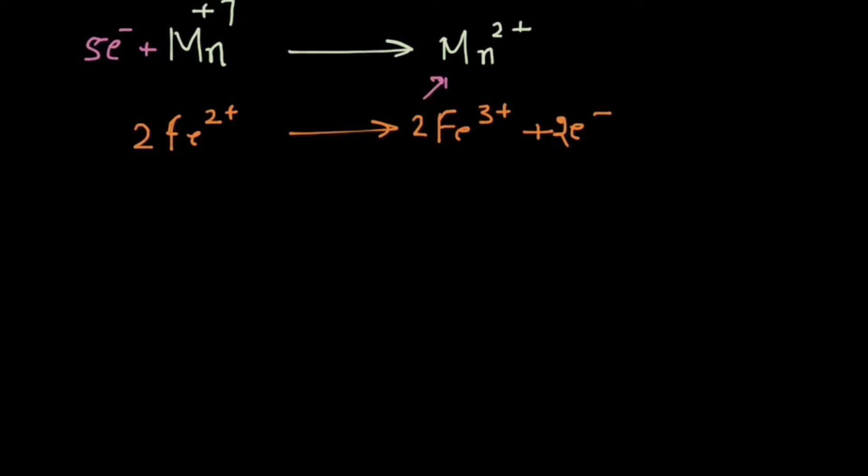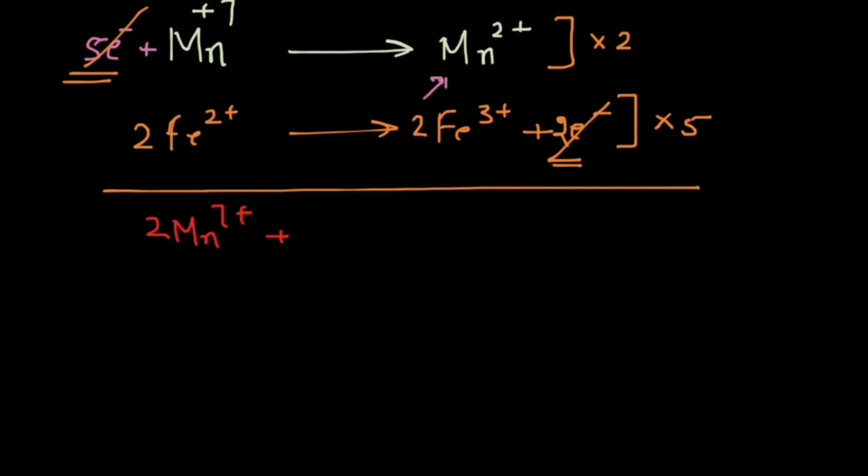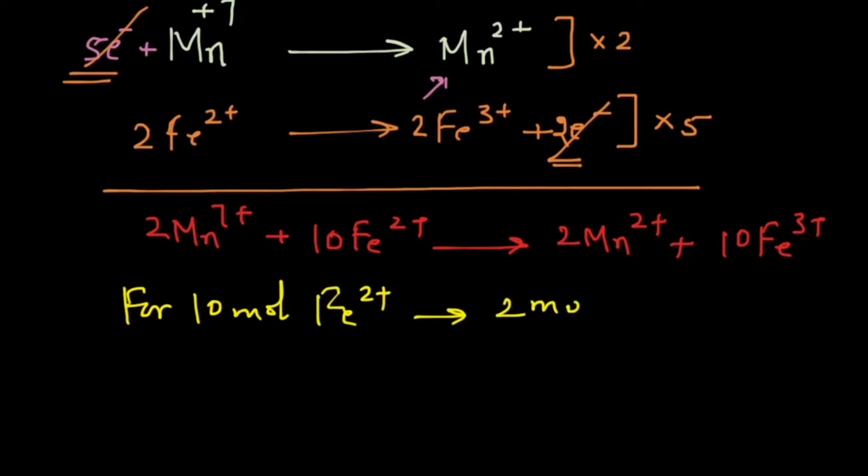Now if we try to balance these two equations, then you multiply this by 5 and the first reaction by 2, and that will generate 10 electrons for Mn7+ and 10 electrons here, and they can be cancelled out. And we can write 2 Mn7+ plus 10 Fe2+ will give 2 Mn2+ plus 10 Fe3+, which means for 10 mole Fe2+ I need 2 mole KMnO4.